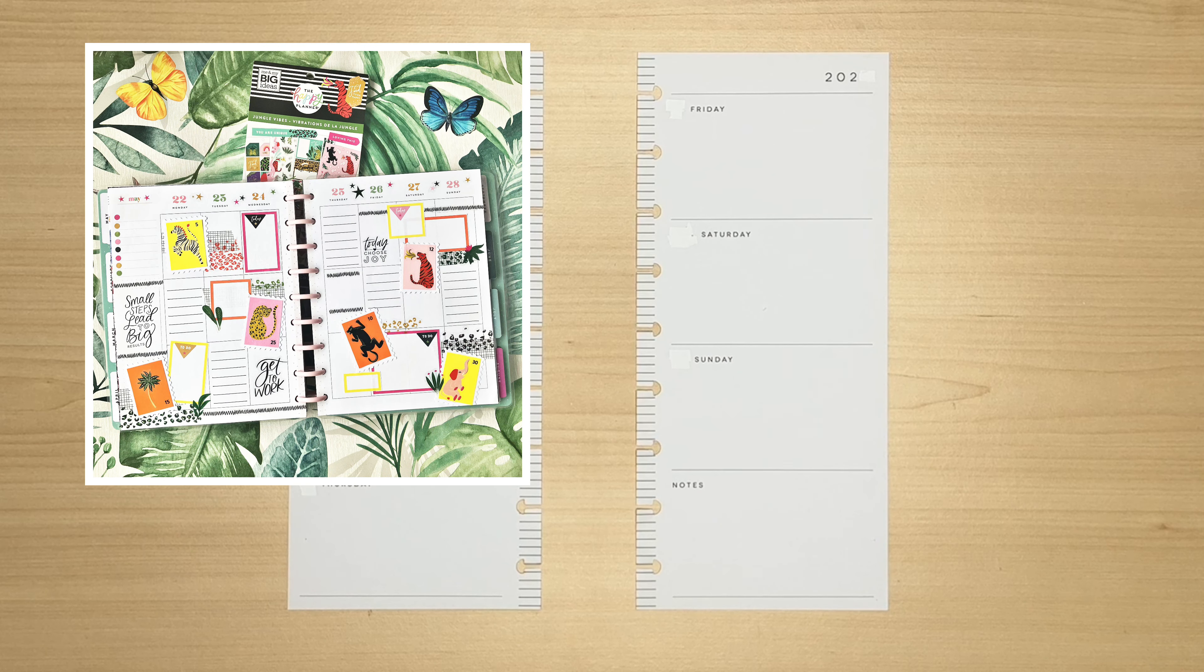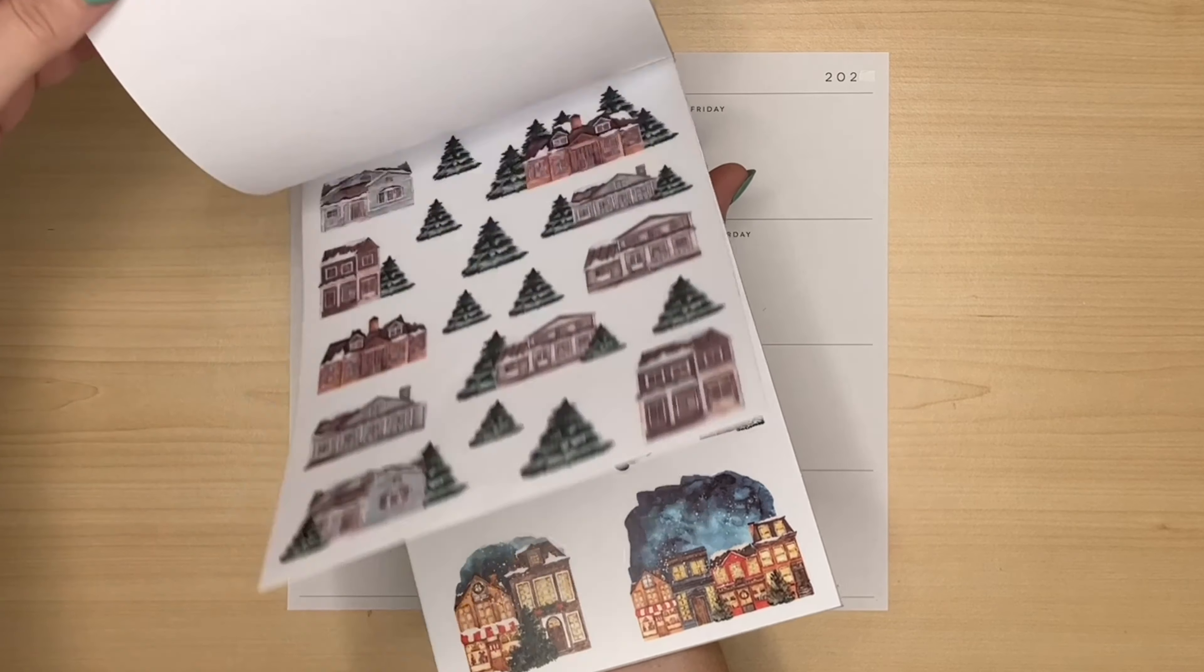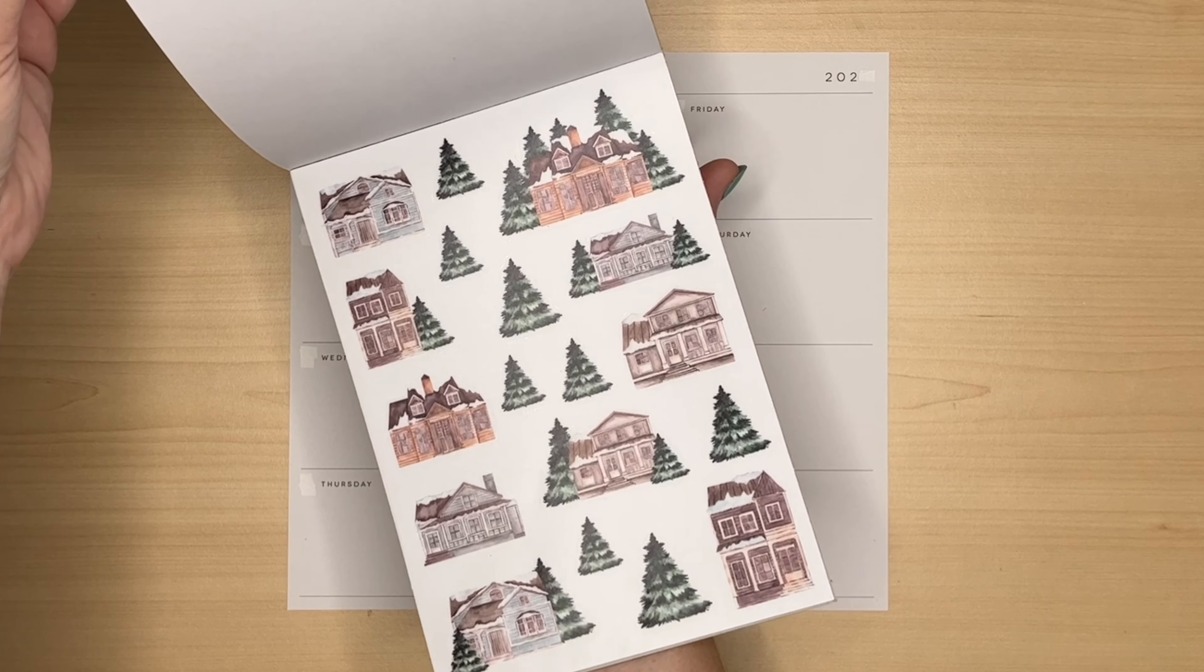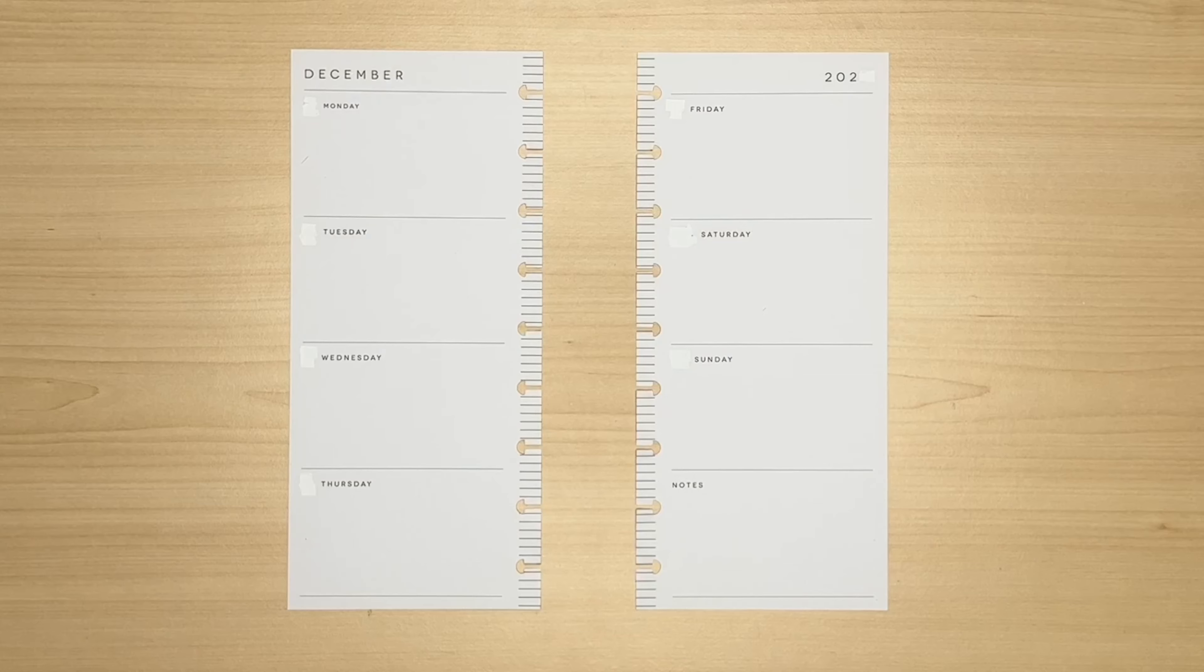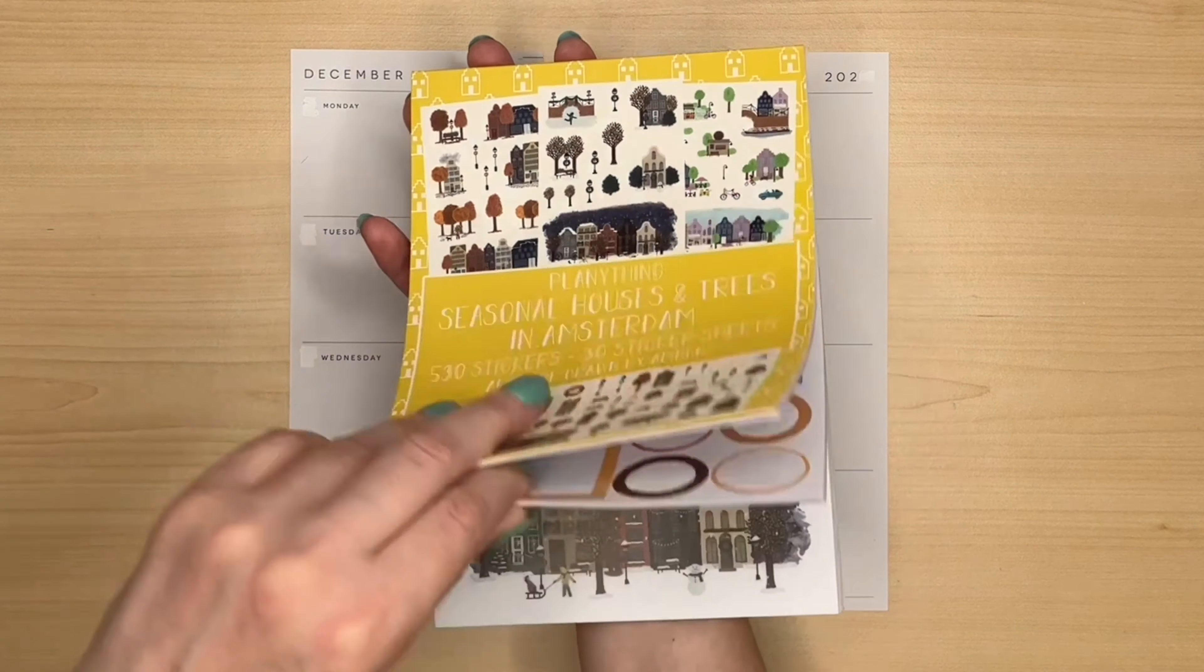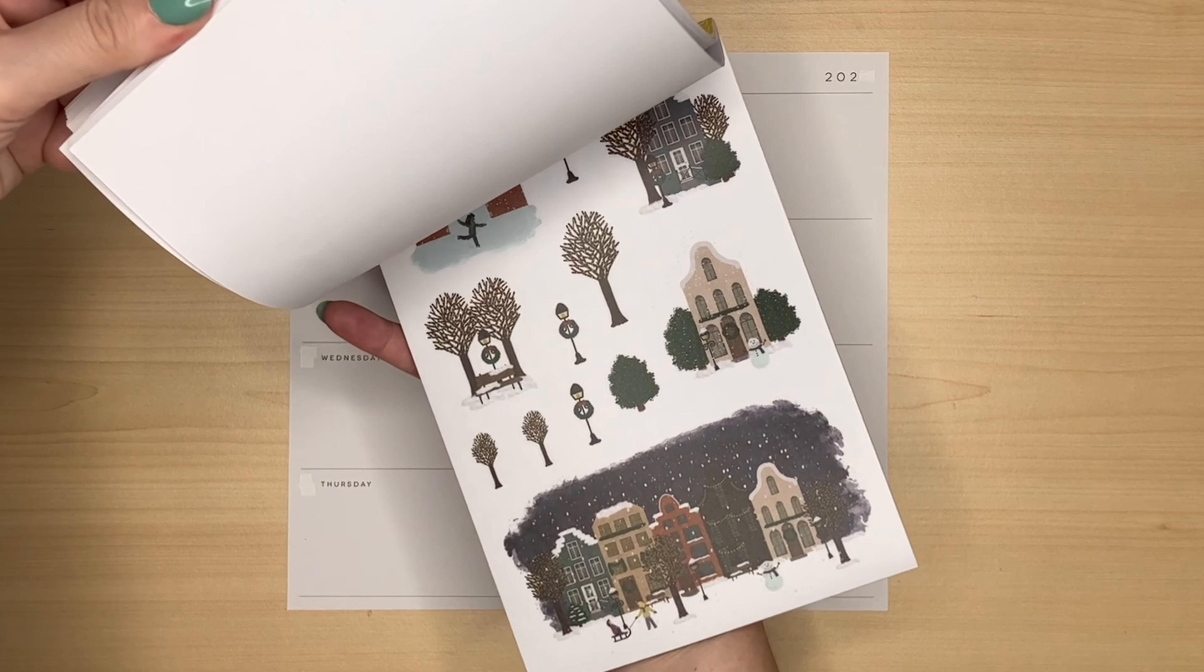I got the idea for this spread from the Bright Travels Happy Planner sticker book and I did a spread earlier in the year where I used small stickers from the Jungle Vibe sticker book and turned them into stamps. So I'm going to be looking for some small icons, maybe some houses from this sticker book or some trees.